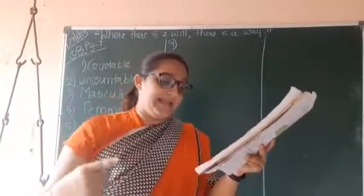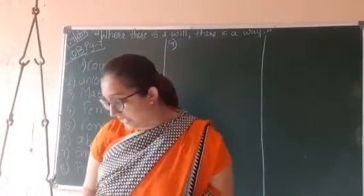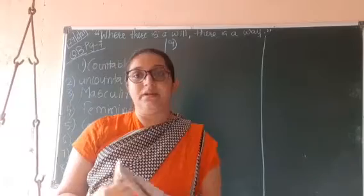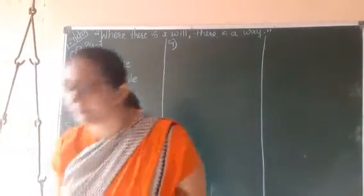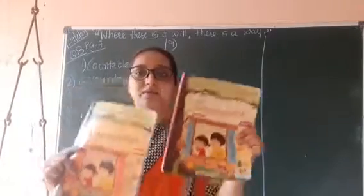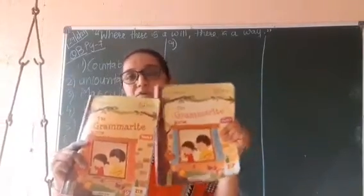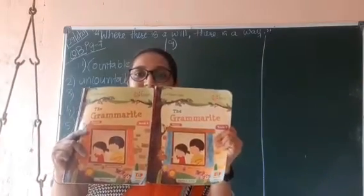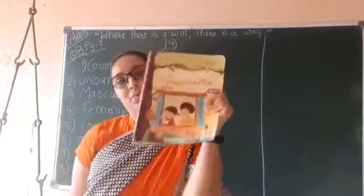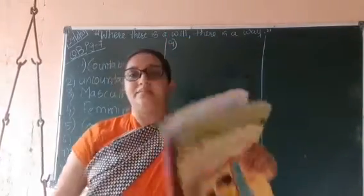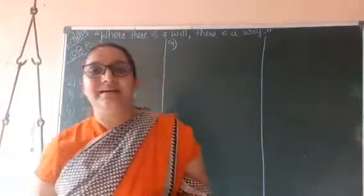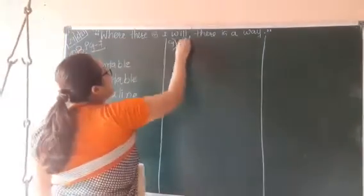A noun that denotes more than one person, place, animal, or thing. For example, right now I am holding two books of grammar — two books, more than one. If I am talking about one book it is singular, but if I am talking about more than one book it is plural noun. So here you will write plural.